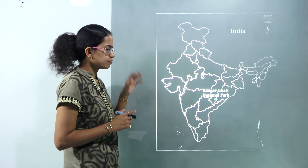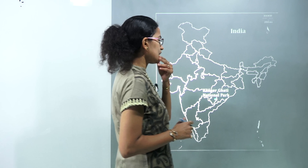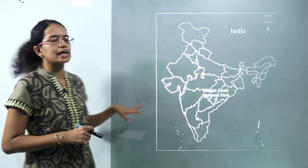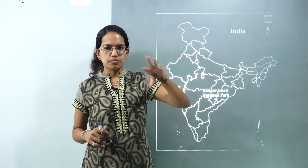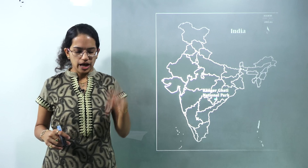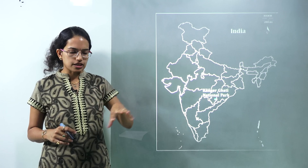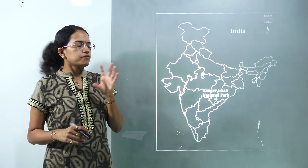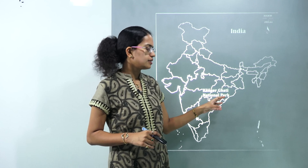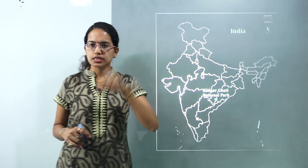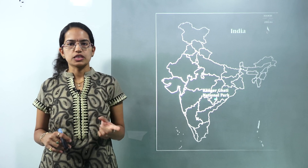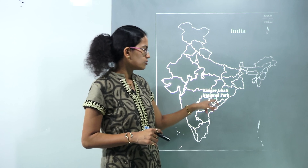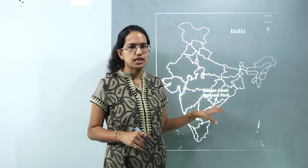The final map location for today is Kanger Ghati, a national park located in the Bastar district in the Jagdalpur region of Chhattisgarh. The state bird of Chhattisgarh, the Hill Myna, is very commonly seen in this area.